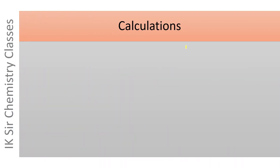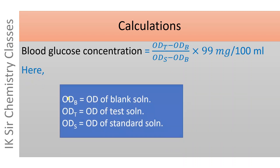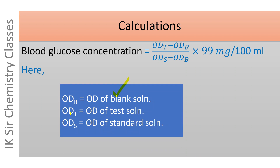Now the most important part of the method — calculations. Blood sugar concentration in the blood serum equals (ODT minus ODB) divided by (ODS minus ODB), multiplied by 99 milligram per 100 ml. Here ODT is the optical density of the test solution, ODB is the optical density of the blank solution, and ODS is the optical density of the standard solution. If the optical densities of the blank, test, and standard solutions are known, we can easily calculate blood sugar concentration using this relationship, and the result is in milligram per 100 ml.